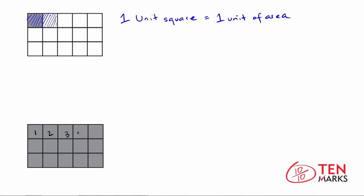I see 1, 2, 3, 4, 5, 6, 7, 8, 9, 10, 11, 12, 13, 14, and 15. So there are 15 unit squares in here. And remember that one unit square equals one unit of area, which means if you have 15 unit squares, you have 15 units of area. So this rectangle has an area of 15 unit squares.